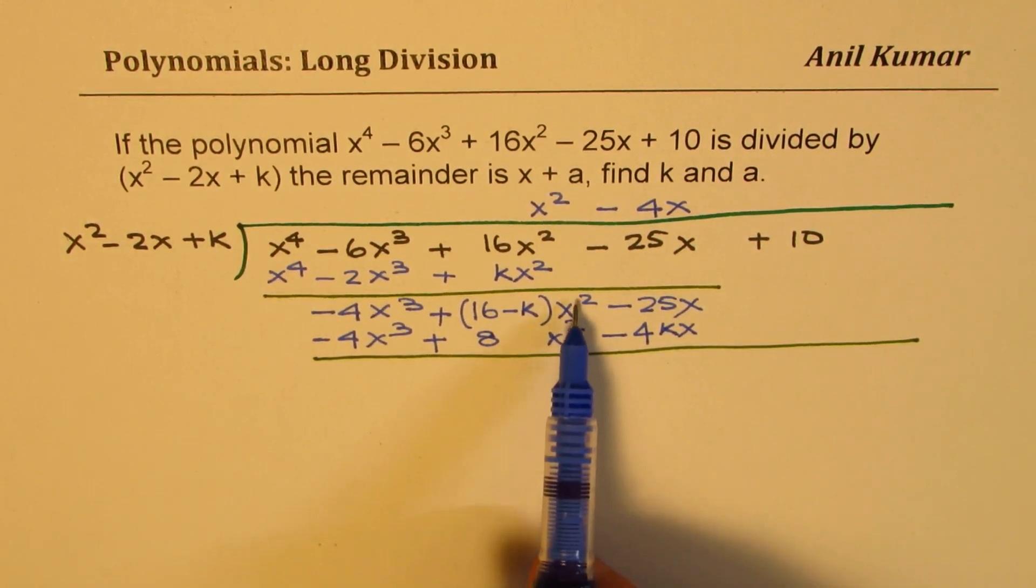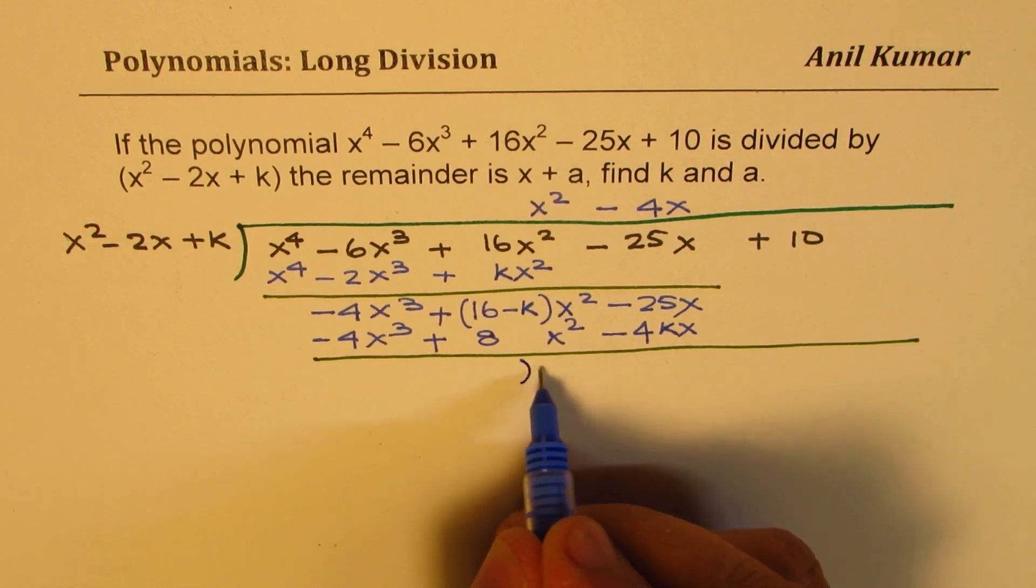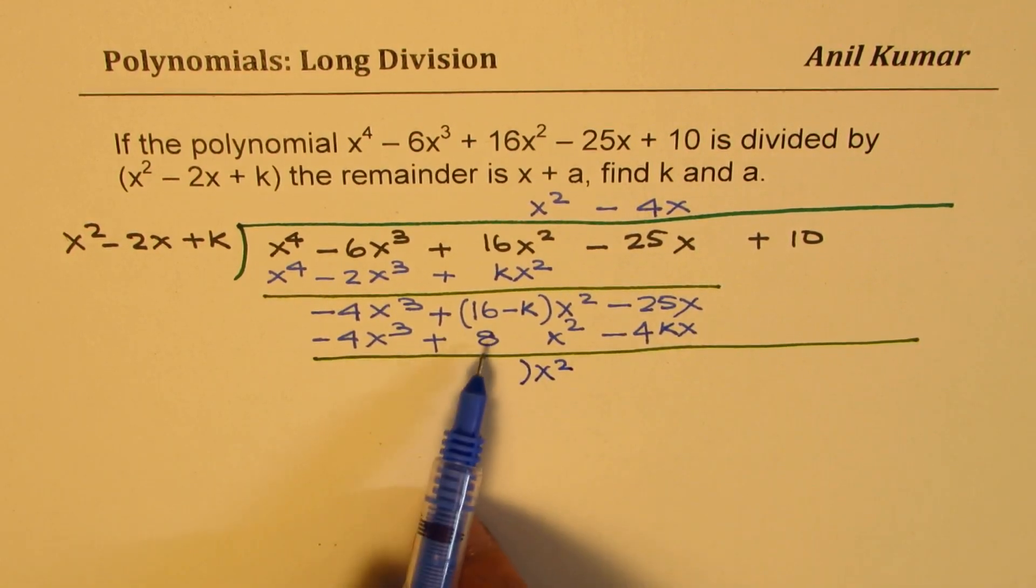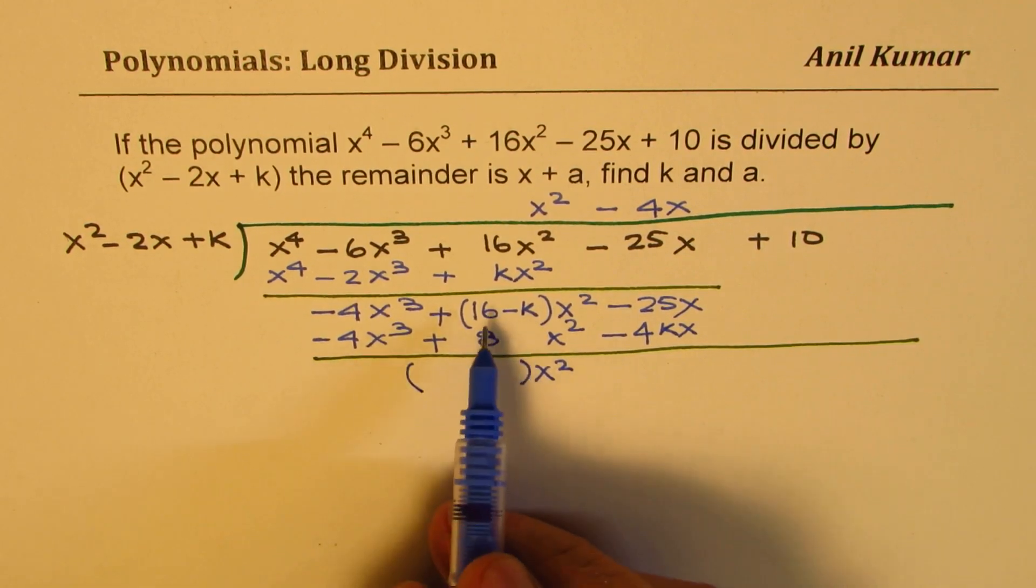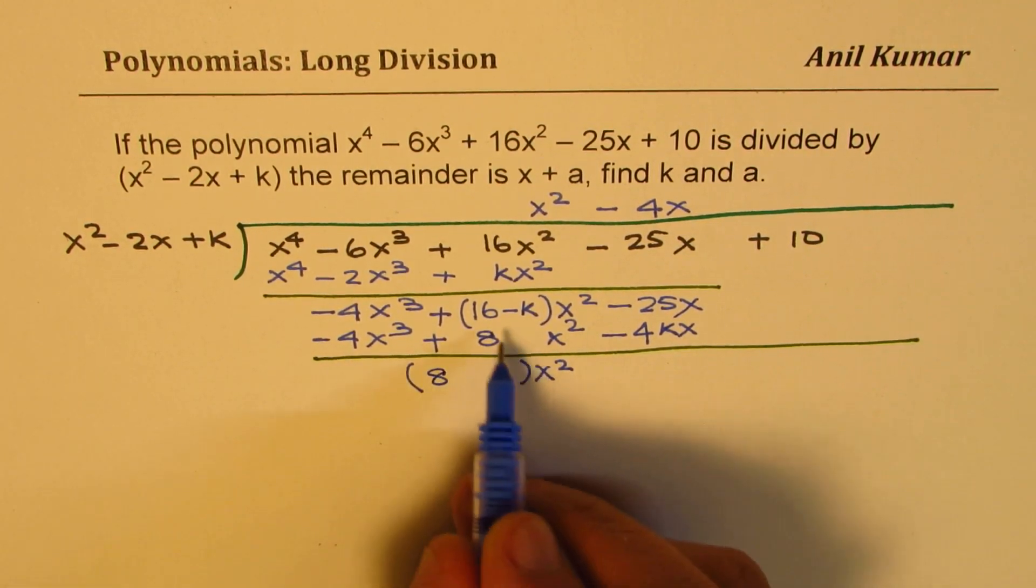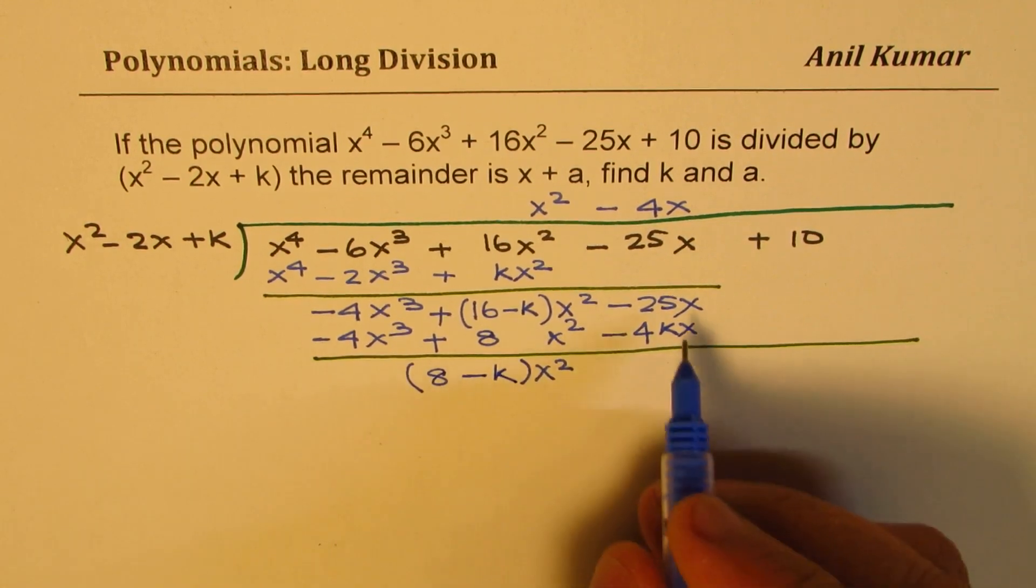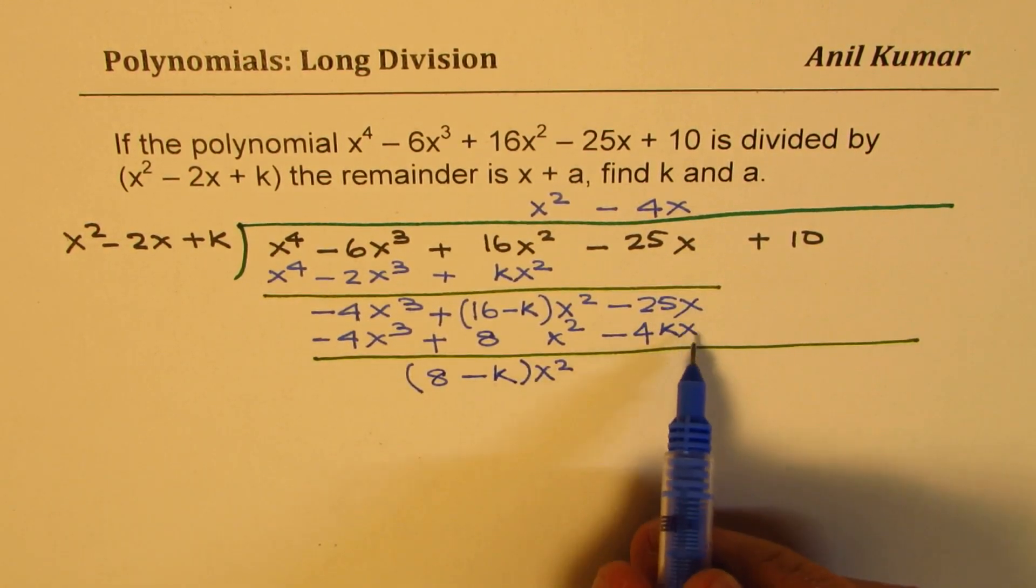So you have to be very careful. x^2 is common. So let's take x^2 common and we have to do all this within the brackets. So the numbers are 16 - 8 which is 8 and -k. And here we have x common.